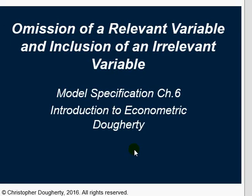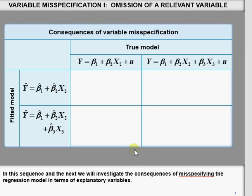I have already uploaded a video on omitted variable bias. This video covers more about the consequences of omitting a relevant variable and including an irrelevant variable. This is basically Chapter 6 from the matrix textbook by Christopher Dougherty — you can read that chapter. We have four scenarios: the first is where y is a function of x2 and you fit y as a function of x2, which is the correct case.